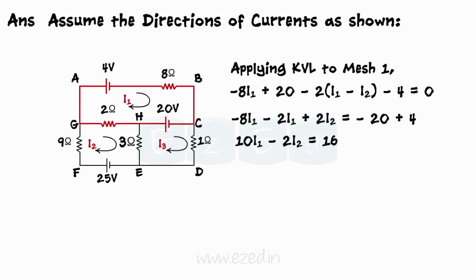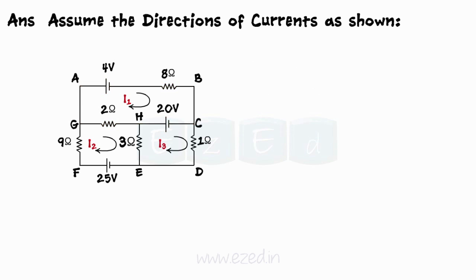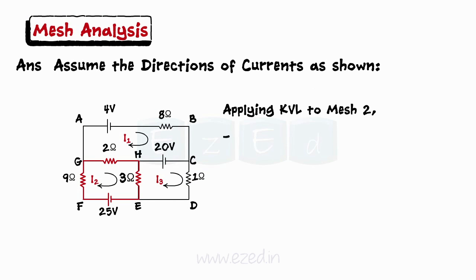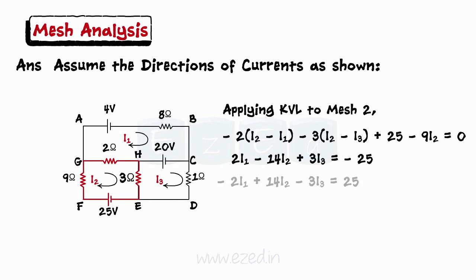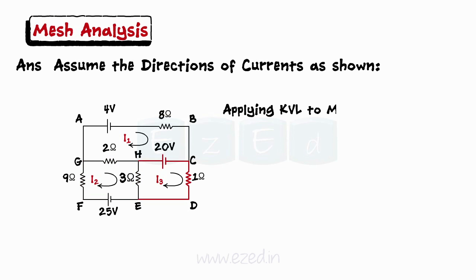Applying KVL to mesh 2, minus 2 into I2 minus I1 minus 3 into I2 minus I3 plus 25 minus 9I2 equals 0. Simplifying, we get an equation with the three currents as unknowns.